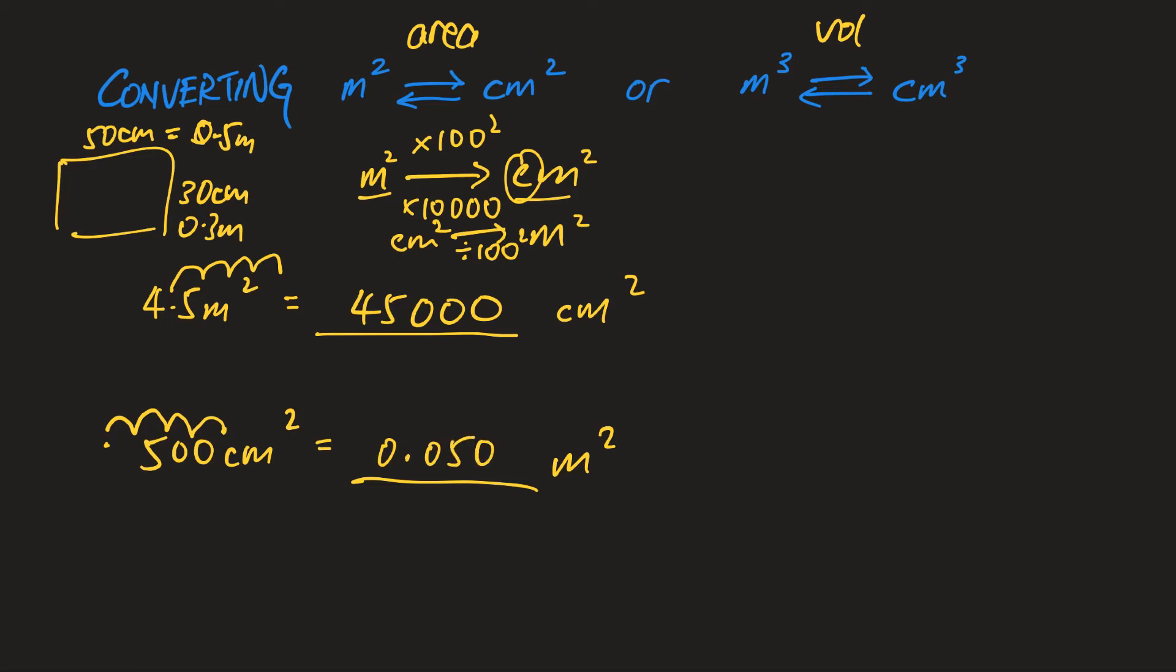How about volume? As you can guess, it's very similar. If I give you 0.23 meter cubed changing to cm cubed, what you need to do is the same way. Meter to cm, recall your basic, is times 100.